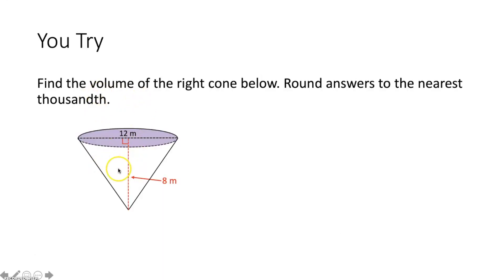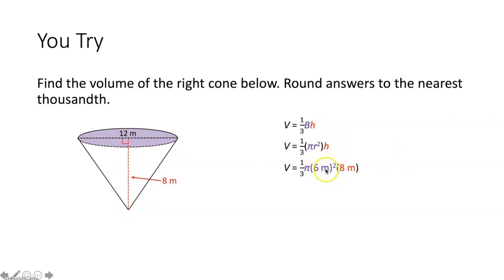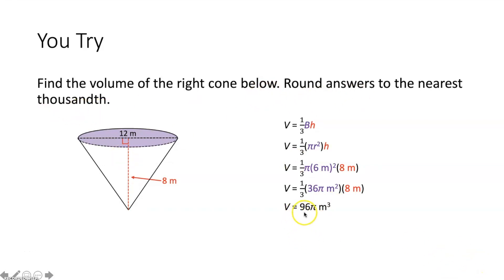Try: find the volume of this right cone. The diameter is given as 12 meters, so the radius is 6 meters. The height is 8 meters. V equals one-third times π times 6² times 8. Six squared times π equals 36π square meters. One-third times 36π times 8 gives an exact volume of 96π cubic meters. Rounded to the nearest thousandth, the volume is approximately 301.593 cubic meters.